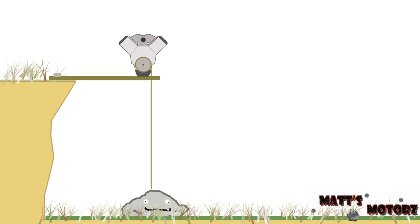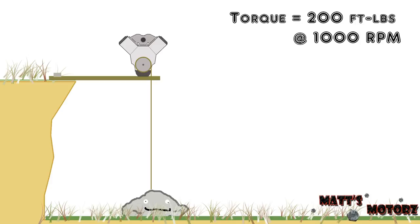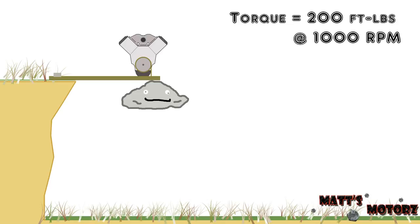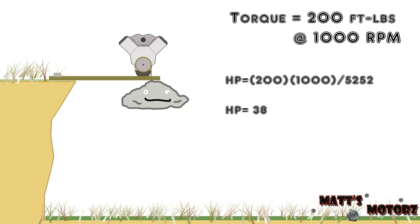So let's say our engine produces 200 foot-pounds of torque at 1,000 RPM. Since our crankshaft circumference is 6.283 feet and the depth of the cliff is 6,283 feet, it's going to take 1,000 revolutions to lift the rock from the bottom to the top. And since we are revolving at 1,000 RPM, it's going to do this job in one minute. Using our equation, horsepower equals 200 times 1,000 divided by 5252, which gives us 38 horsepower.